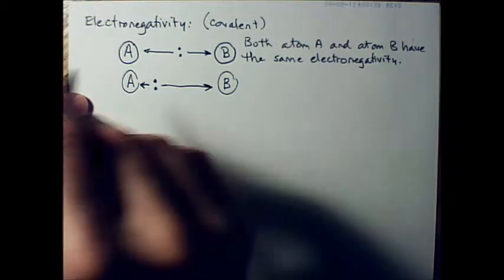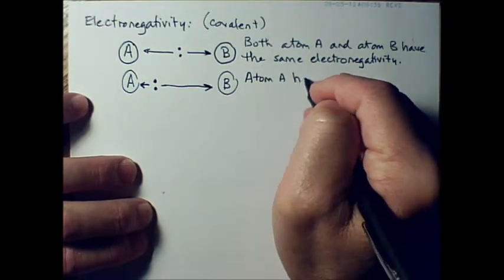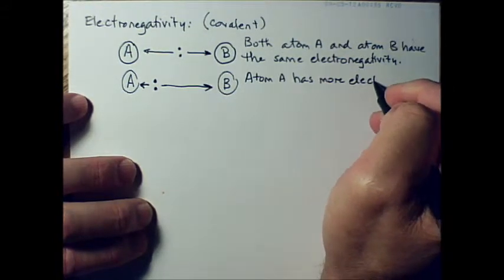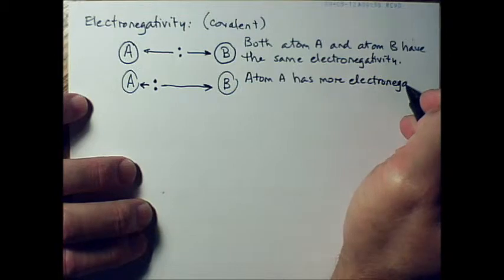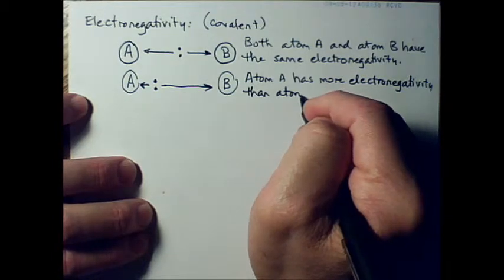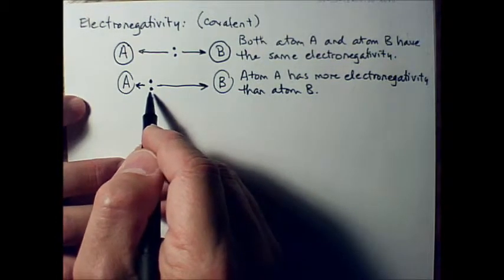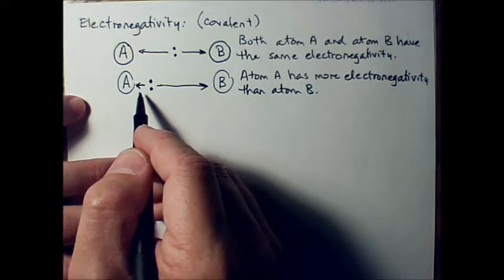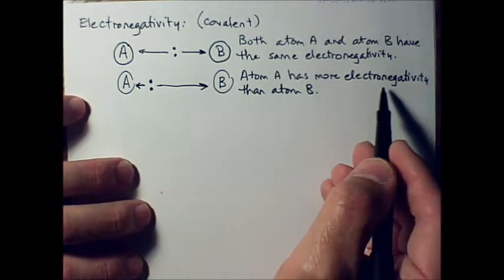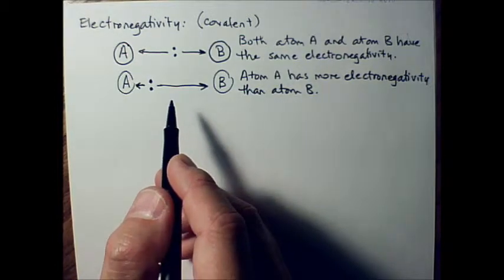So A is pulling on those electrons more strongly than B. A is winning the Tug-O-War. Therefore, atom A has more electronegativity than atom B. So the effect is A has the electrons over here most of the time. The model that explains it is electronegativity, some force or energy that causes those electrons to be closer to A more than closer to B. Does that make sense?